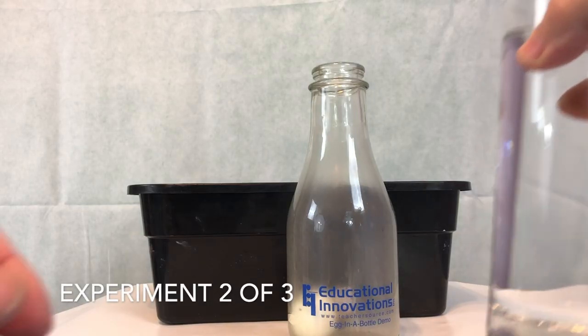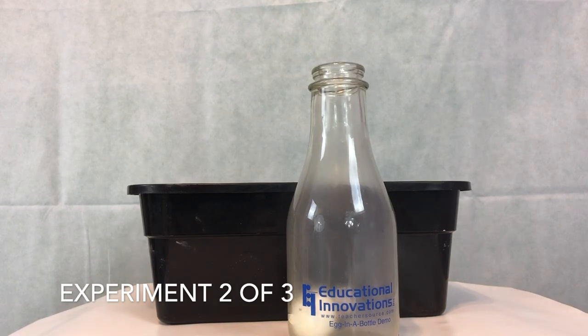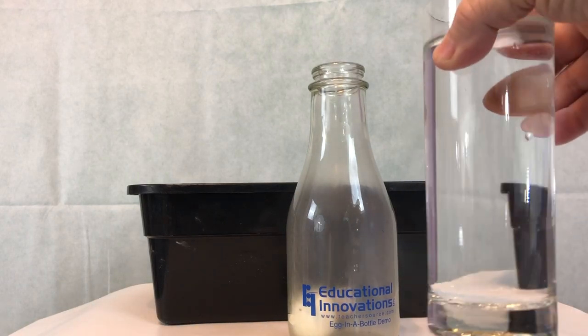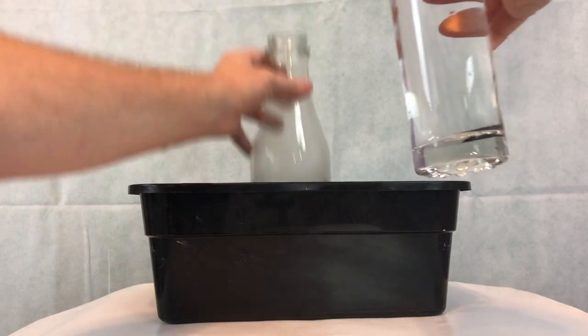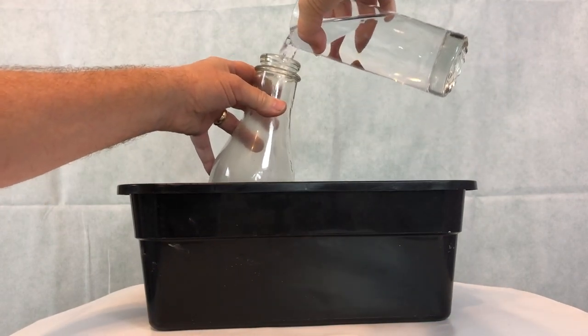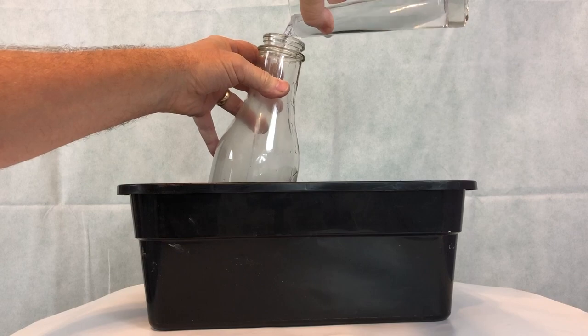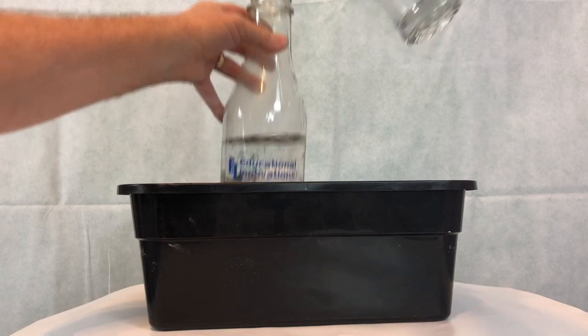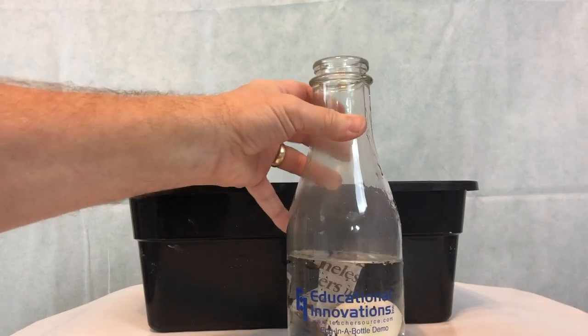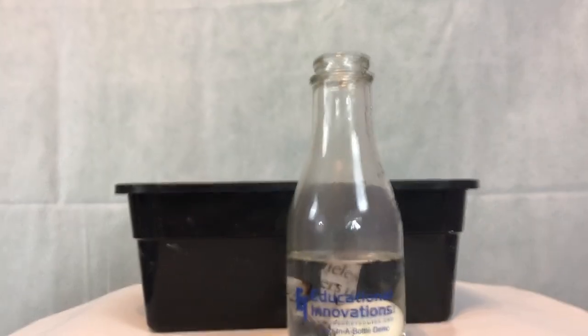Alright, experiment two of three, which is probably the harder of the experiments. So now we want to take the egg out of the bottle. So what we're going to do is we're going to fill the milk bottle up about halfway full of water. As you'll see in just a second, you got the burnt newspaper in there, you got the egg, and now to get it out.